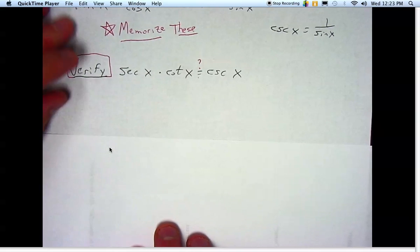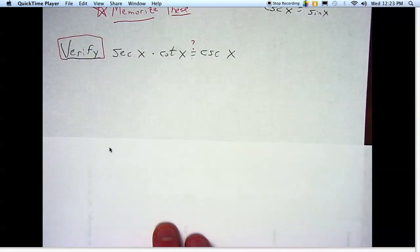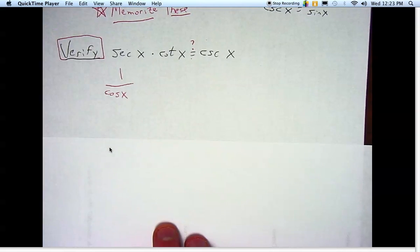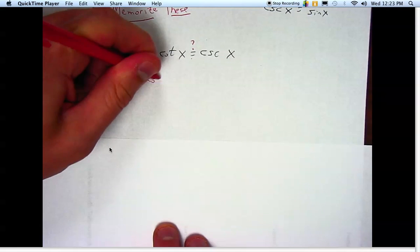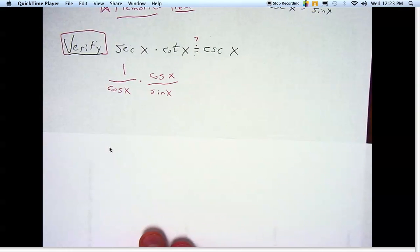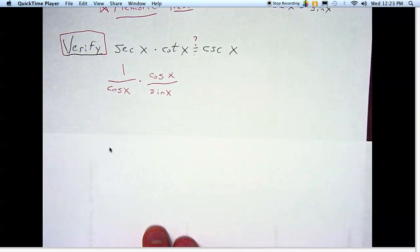And so our strategy is simply to rewrite things in terms of sine and cosine. Secant is one over cosine of x. Cotangent is cosine of x over sine of x. So I'm just working on this left-hand side here. Now we have to do a little bit of algebra.